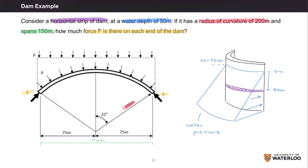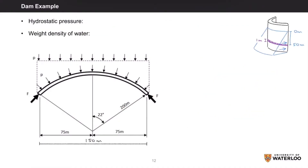Since we're only analyzing a small strip of the dam and it's located at a great depth below the surface, we can neglect the pressure gradient along the strip. If you recall from our hydrostatic loads lesson — lesson 2.9.6 in week 4 — hydrostatic pressure increases linearly with depth.